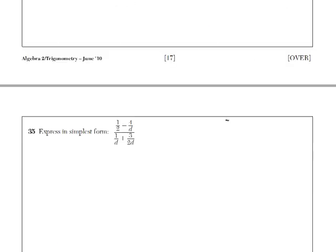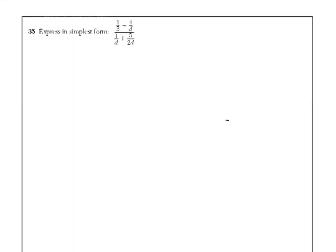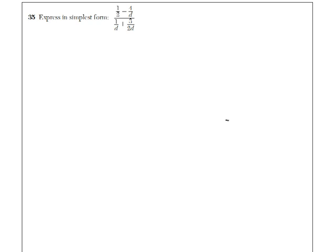Moving on to question number 35. 35, express in simplest form, 1 half minus 4, that's a 4 over d, over 1 over d plus 3 over 2d. This is called a complex fraction. I think that the most straightforward way of doing this question, it's not the slickest, but I like it. Do it as three separate questions. Work out the top first.